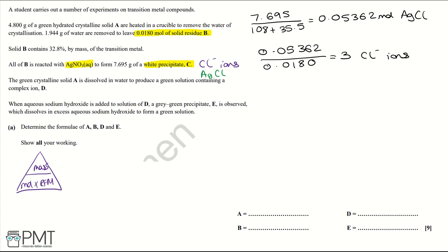Next, we use the equation triangle to work out the relative formula mass of B. We do mass divided by moles: that's 4.8 minus 1.944, which gives us a mass of B of 2.856 grams. We work this out using the two masses given in the question — we heat up solid A, remove the water, and are left with B. So subtracting the two masses gives us the mass of B.